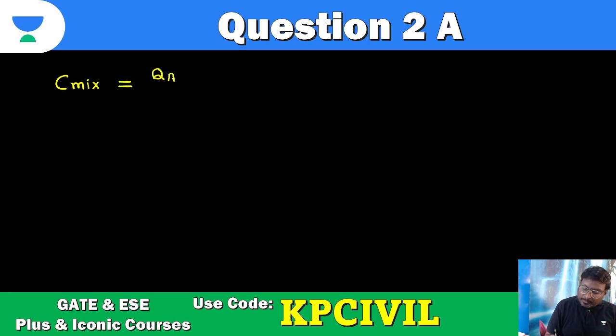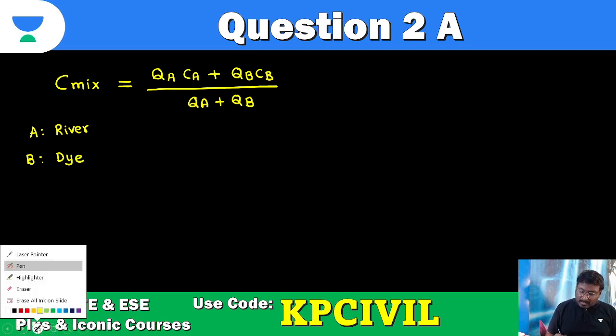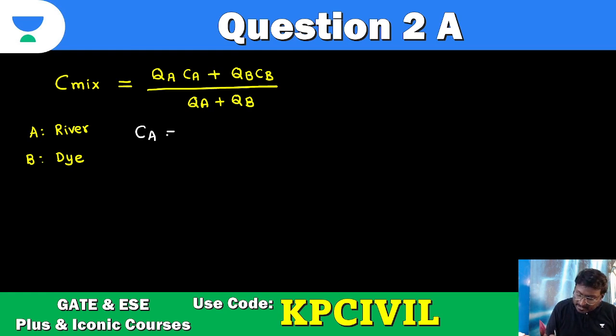C mix equals Qa Ca plus Qb Cb upon Qa plus Qb. A is considered as river, B is considered as dye. And very clearly it was mentioned initial concentration of dye Ca is 0. So total will become 0. Qa into Ca will become 0. So we can consider C mix equals Qb Cb upon Qa plus Qb. This is the formula.